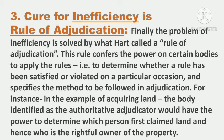So we have now covered all three defects — defect of uncertainty, defect of static character, and defect of inefficiency — and their remedies: rule of recognition (ROR), rule of change (ROC), and rule of adjudication (ROA). These three secondary rules, though different from primary rules of obligations, are all connected to primary rules and depend on them. The three secondary rules are also interconnected with each other. The crux is that, according to Hart, law is the union of primary and secondary rules, and when primary rules get combined with secondary rules, they together form a developed legal system.